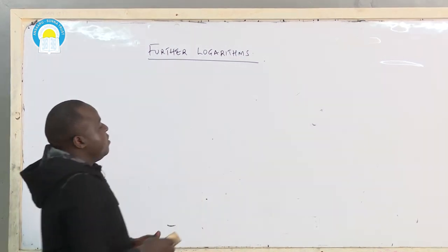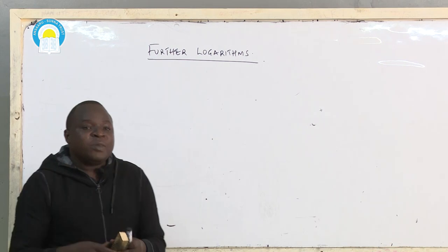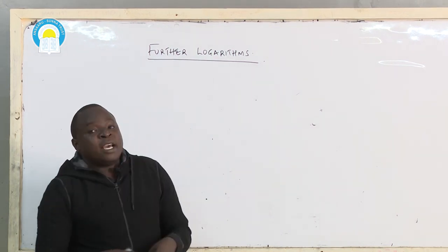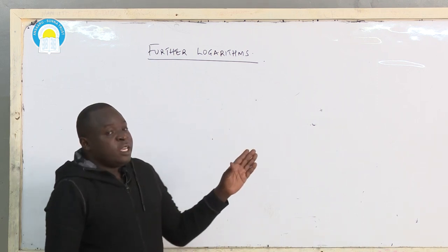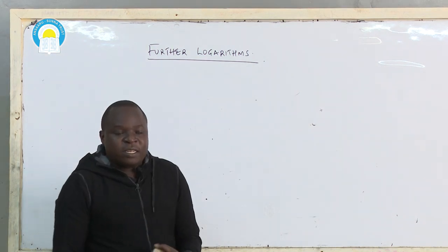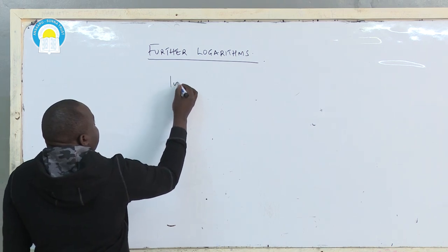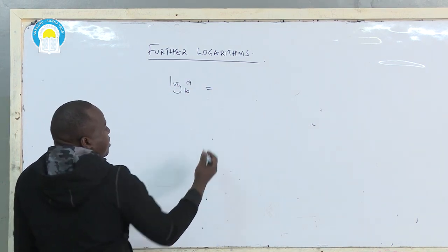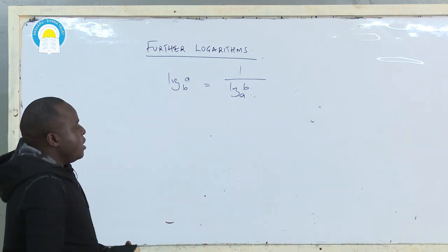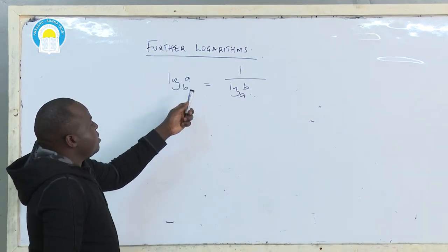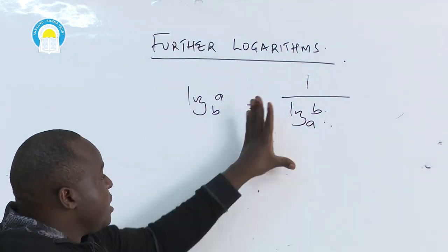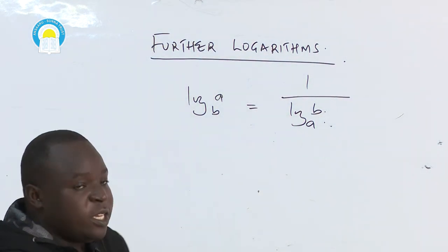Today, there are two more laws I need to explain. I'll begin straight away from the next law, then show an example of a question that relates to it. There is this law: log A base B is equivalent to 1 over log B base A. If you have a log base, the base becomes the log and the log becomes the base, just like shown here.